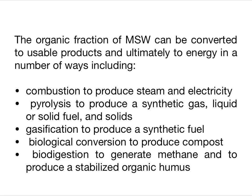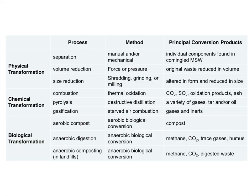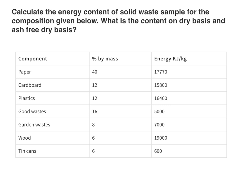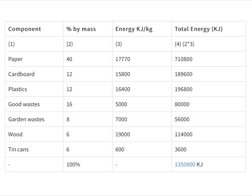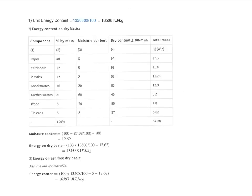Component data by percent mass and energy (kJ/kg) with moisture content: paper 40%, 17,700 kJ/kg; cardboard 12%, 15,820 kJ/kg; plastic 12%, 16,400 kJ/kg; food waste 16%, 5,000 kJ/kg; garden waste 8%, 7,000 kJ/kg. Generation rates and solid waste generation rates are used to estimate the amount of waste created by residences or businesses.